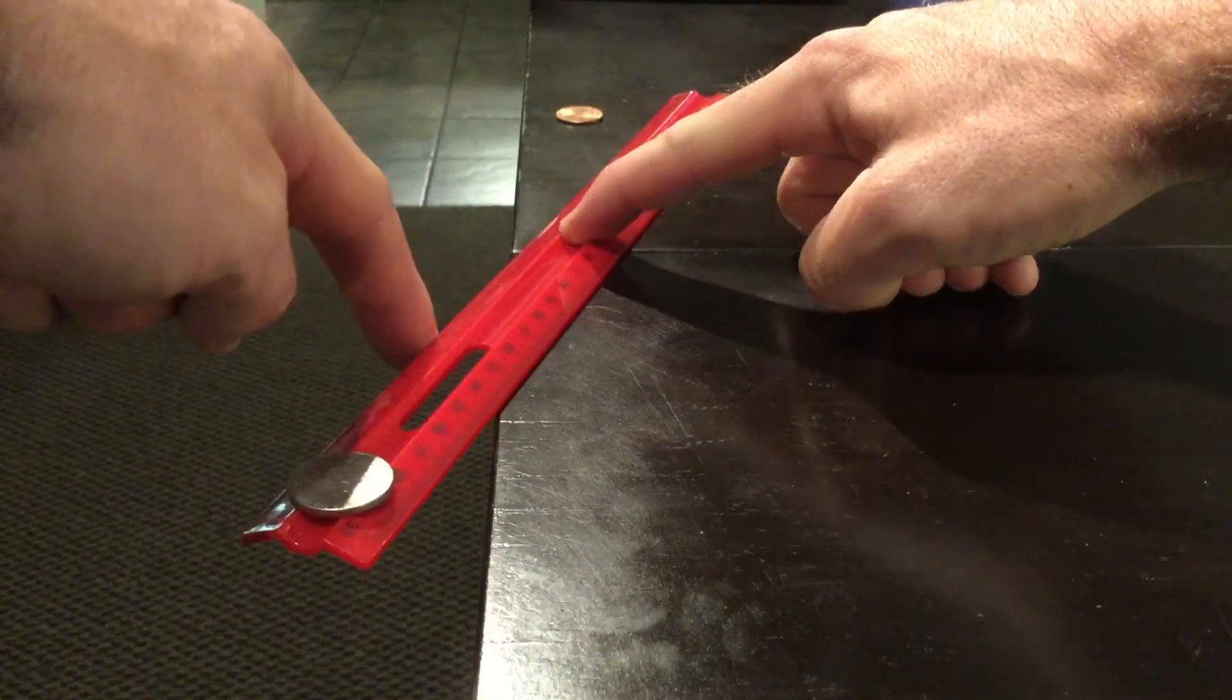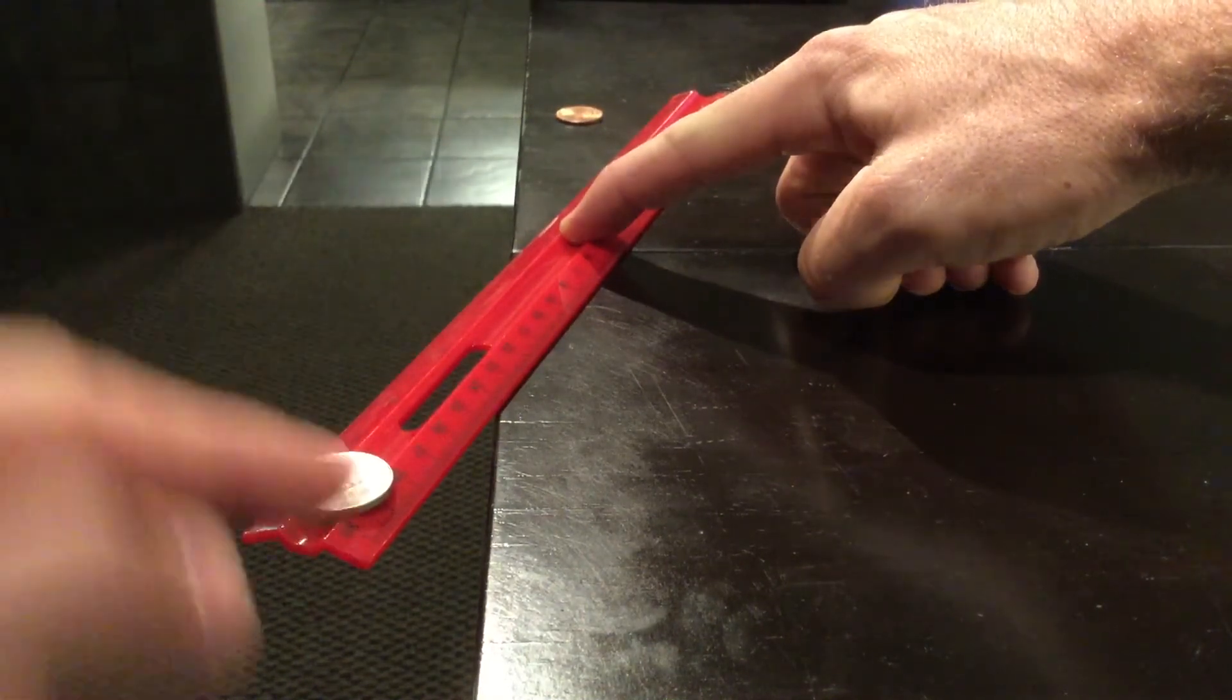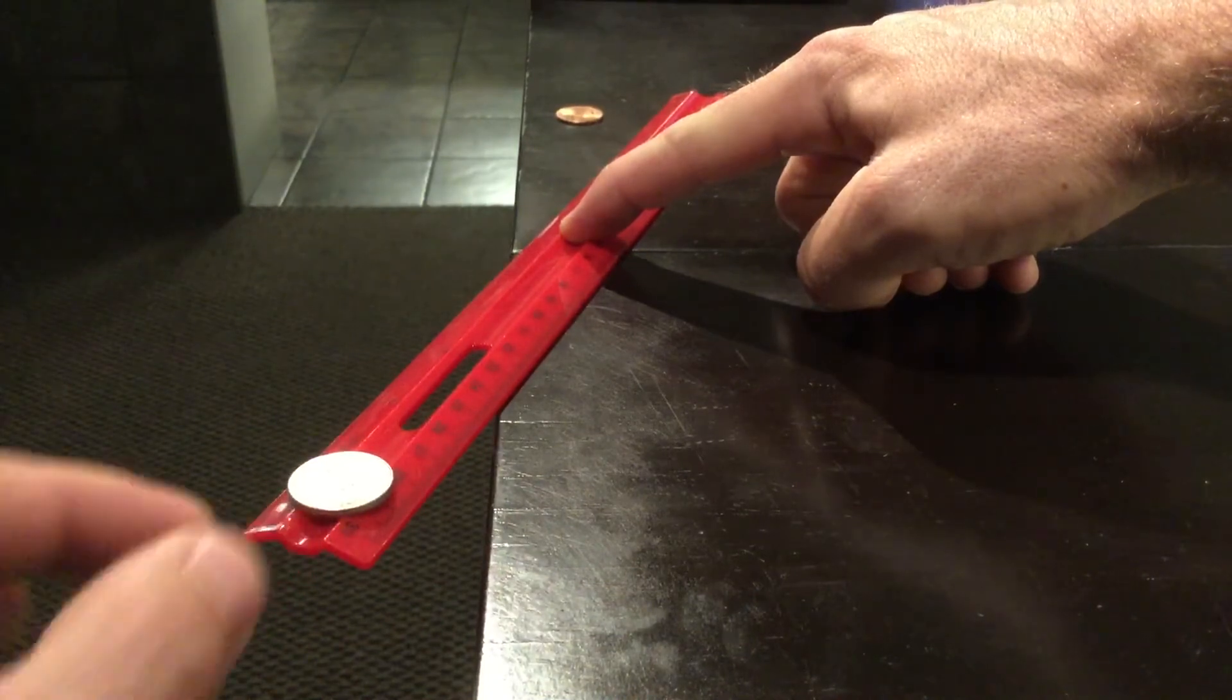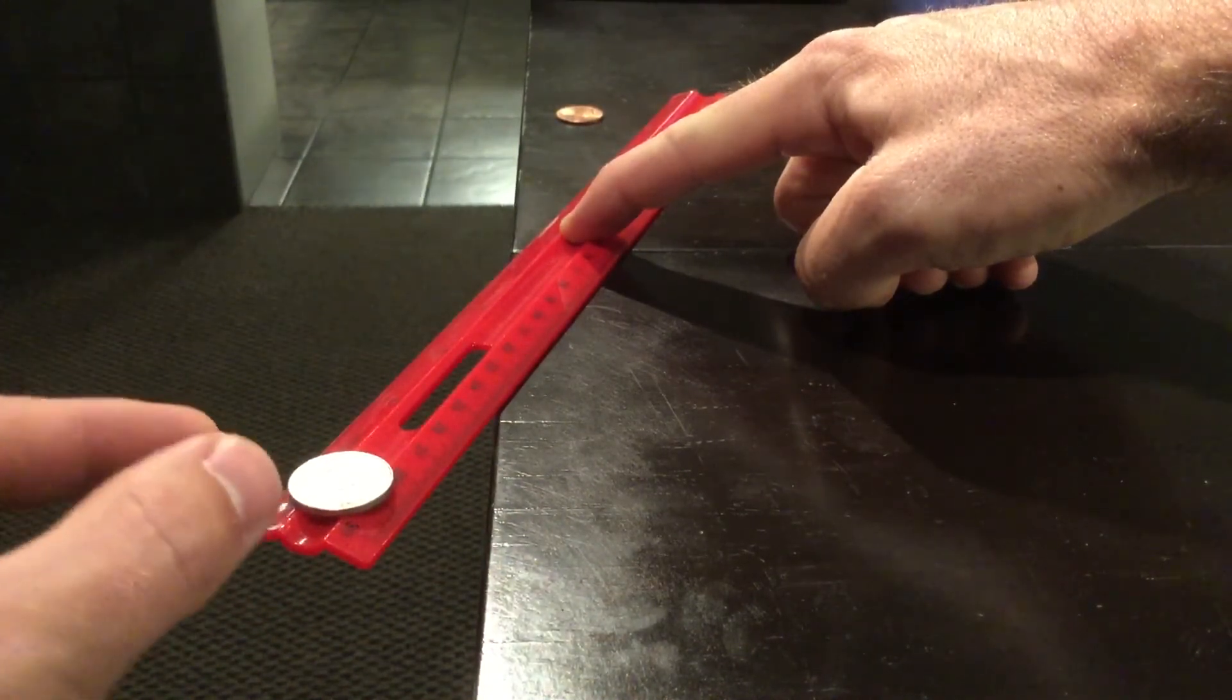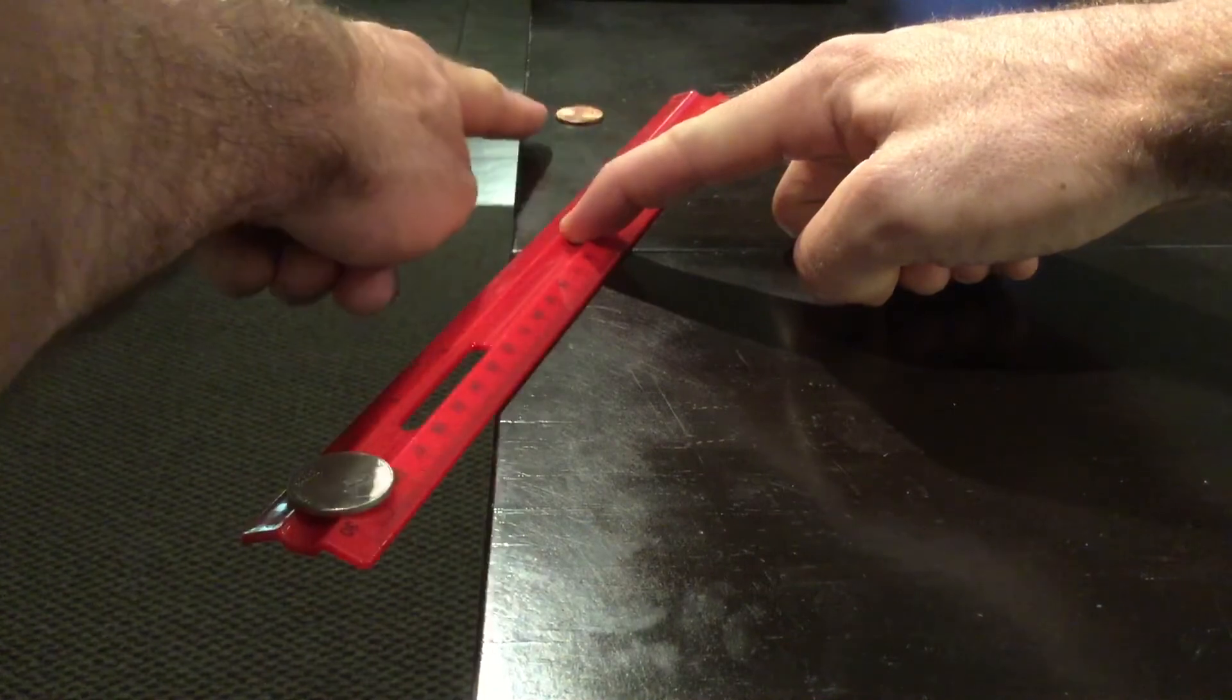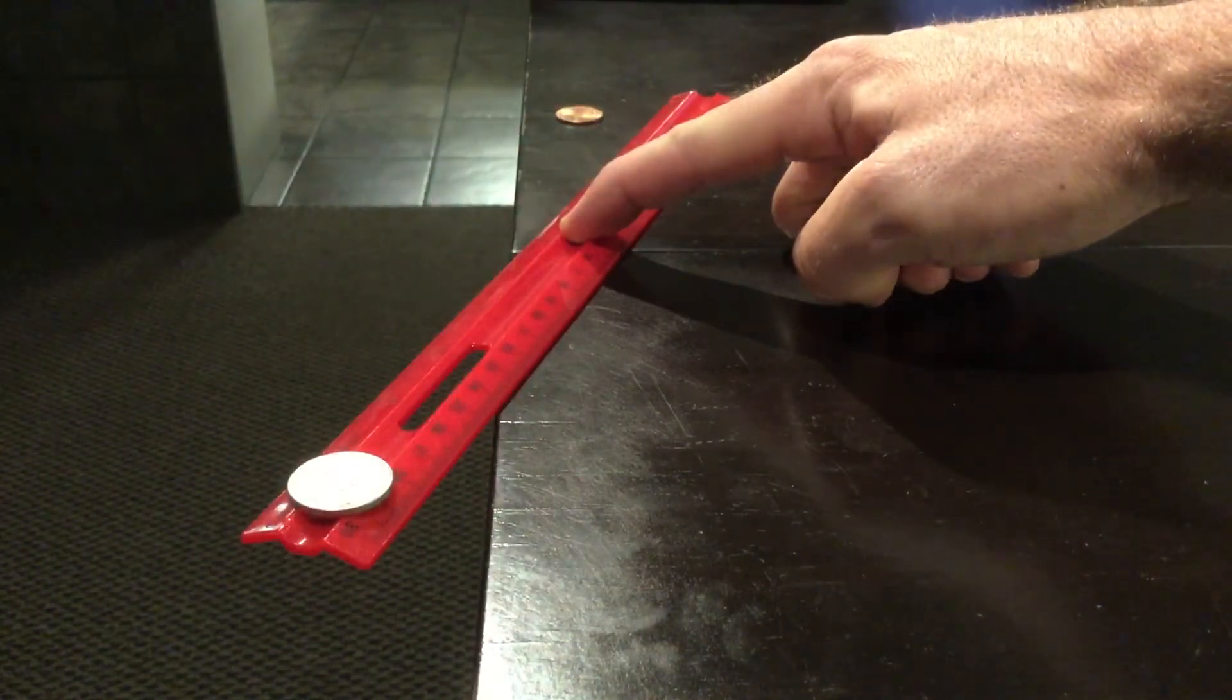If you do it correctly, what's going to happen is the ruler is going to leave from underneath the nickel, which lets it fall straight down like it's dropped from rest, and this end of the ruler will hit the penny and launch it horizontally.